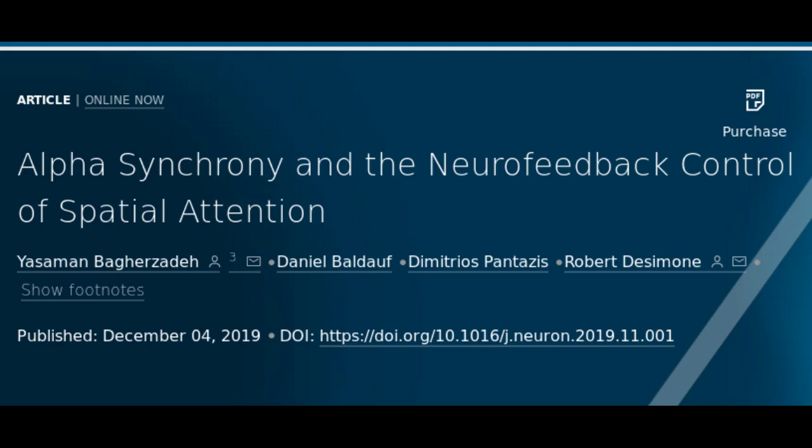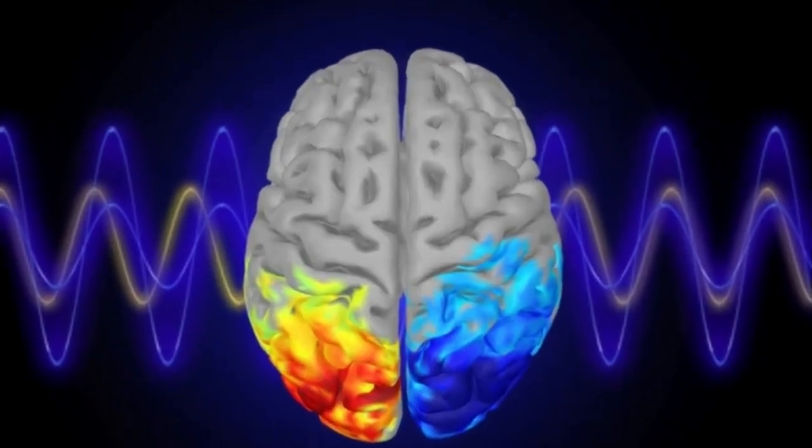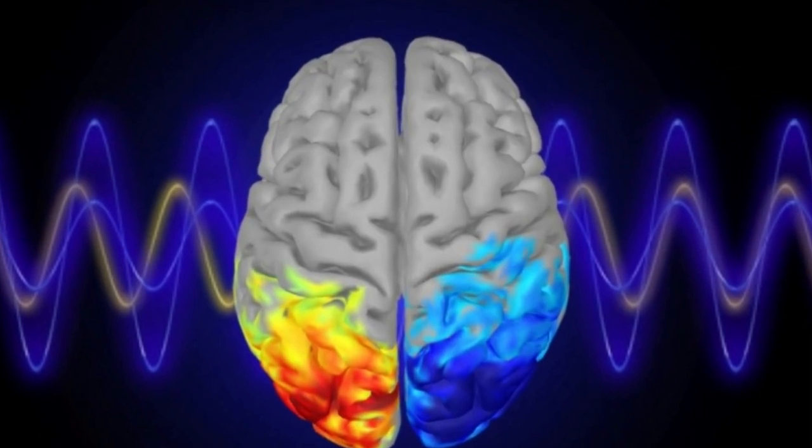It is unknown how long these effects might last, and whether this kind of control could be achieved with other types of brain waves, such as beta waves, which are linked to Parkinson's disease.